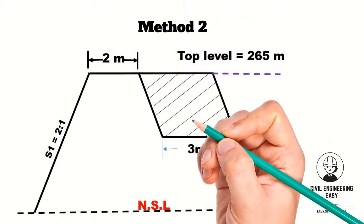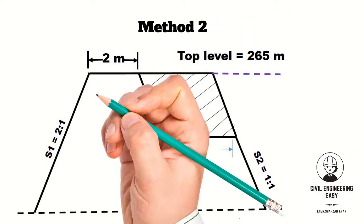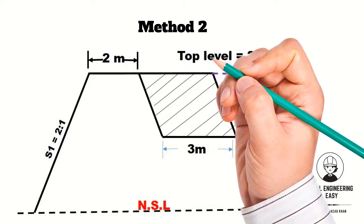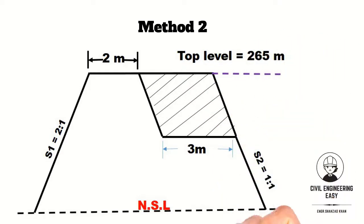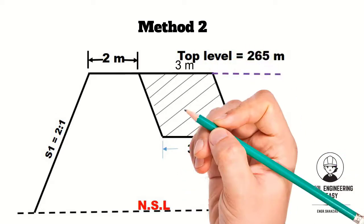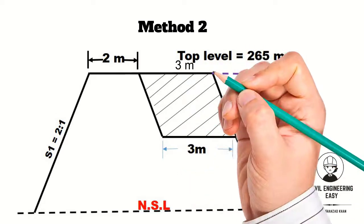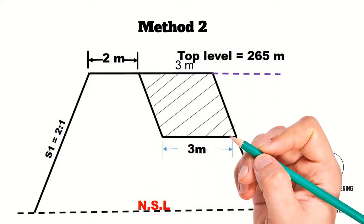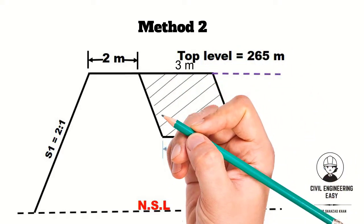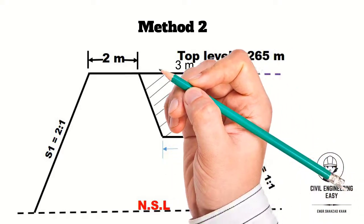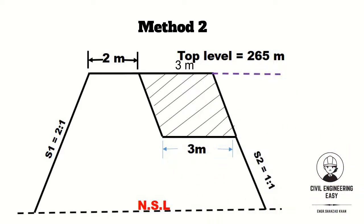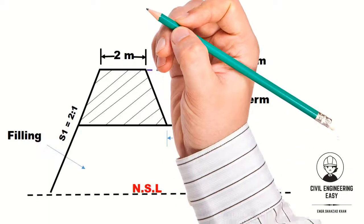In the second method, as shown in the figure, the quantity of the whole solid bank is worked out first. For this bank, the top level is 265 meters and the top width is 2 plus 3, equal to 5 meters. Then the quantity of earthwork of the berm portion is worked out separately and deducted. This berm portion is of parallelogram shape with a breadth of 3 meters and height of 1.5 meters.